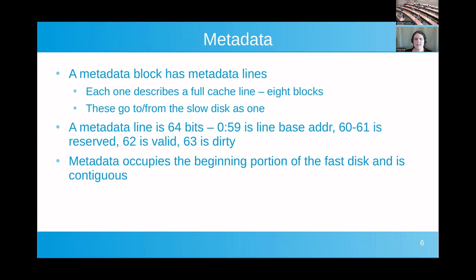The metadata line is eight bytes. We keep 60 bits of disk address — the block address of the lowest block in the line — two bits reserved, and two additional bits for valid and dirty. The nifty thing about having a valid bit is that we can just zero out a volume and have it actually be a valid Alamosa disk, because that just means it has no valid lines. It's still a valid cache, just not one with anything in it. As a result, we don't really have to do any fancy initialization — there's no super block.